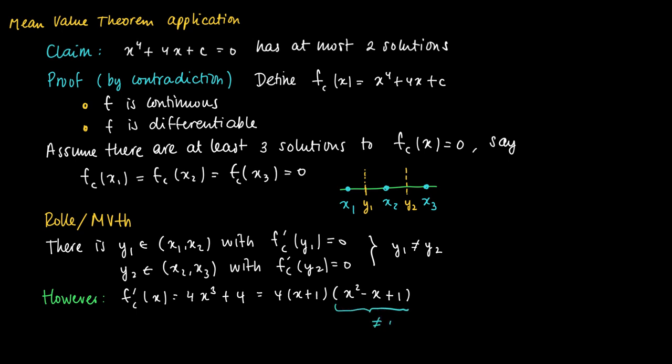And notice that x squared minus x plus 1 is never equal to zero—it's always larger than zero. So the derivative has only one unique root. f prime c(x) equals zero has a unique solution, and this solution is given by x equals minus one.